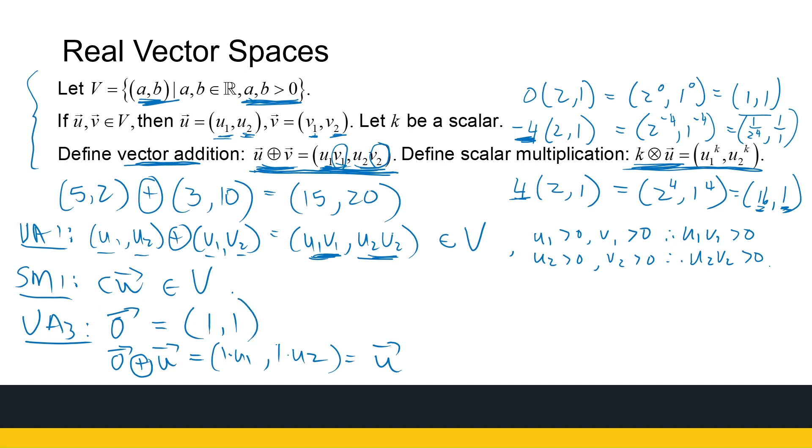So stop thinking that a 0 vector necessarily has 0s in. This is what it looks like. And that is in my set V. So it's a legal 0 vector, and it works. It satisfies the conditions of a 0 vector. And our other vector addition axiom about commutativity, that will work.